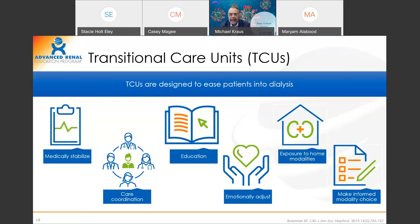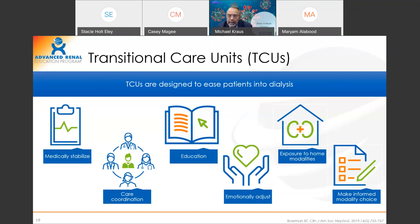The transitional care unit focuses on getting that emotional adjustment, coordinating care between the physician, the nurses, the vascular surgeon, and the transplant center. Once you emotionally and medically stabilize them and get the care where you want it, then it's time to educate them — bring in the importance of why adherence matters, why medicines matter, why diet matters, what kidney disease means to them, and how we can treat it moving into home modalities. Give them the options to understand all the modalities. So at the end of the day, when a patient completes a TCU program, they're referred to transplant, referred to vascular access, medically stable, emotionally adjusted, and well-educated, which allows them and their family to make an informed modality choice.